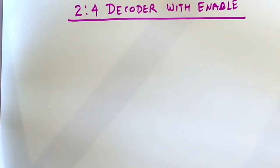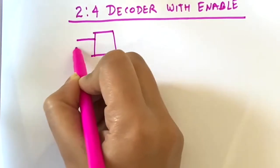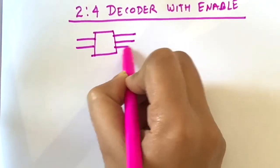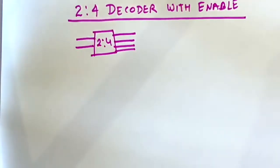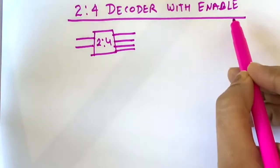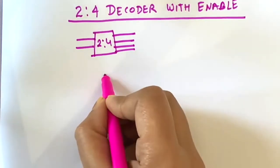So in a basic normal 2-to-4 decoder, what we have is two inputs and four output lines. In case of decoder with enable input, the decoder will look like this.